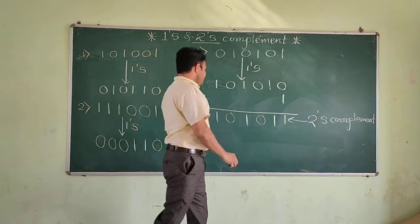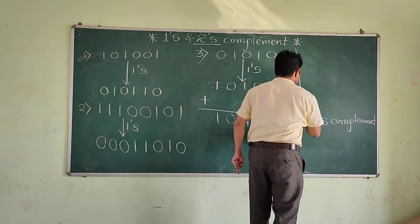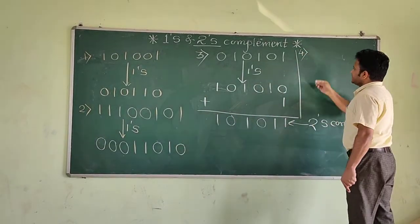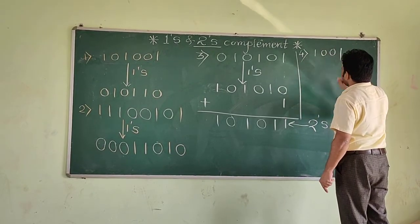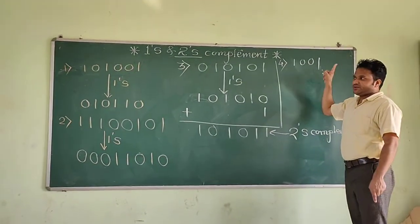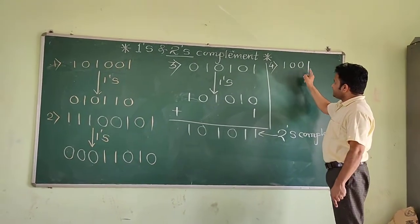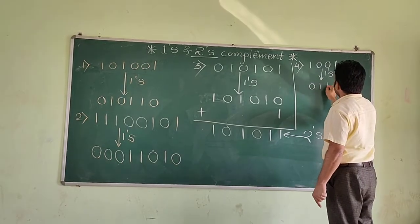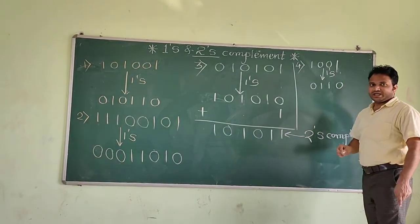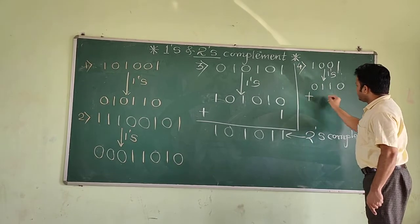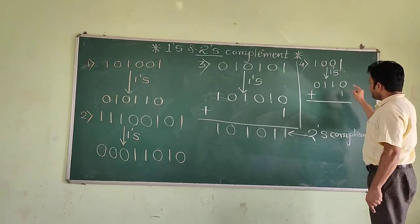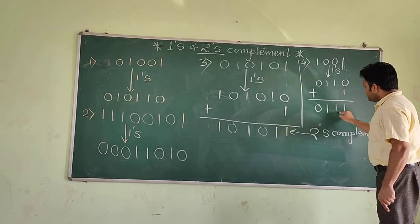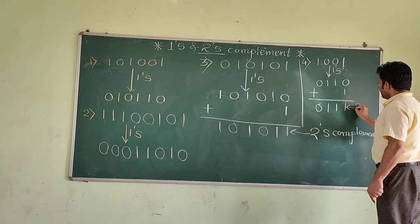Similarly, take another example — Example 4. The number is 1001. This is the given number; you have to find its 2s complement. First find its 1s complement: 0, 1, 1, 0. To find the 2s complement, add 1 to the 1s complement. So 0 plus 1 will be 1, this 1 will be as it is, and 0. This is the 2s complement.